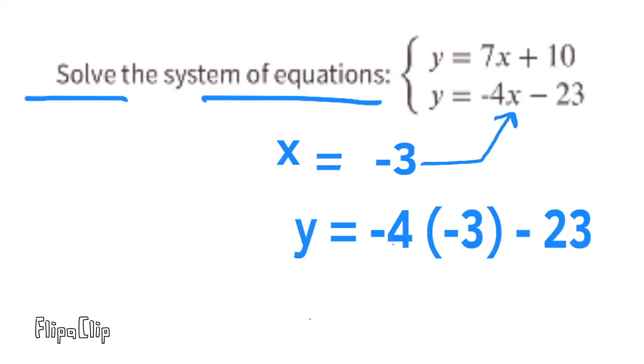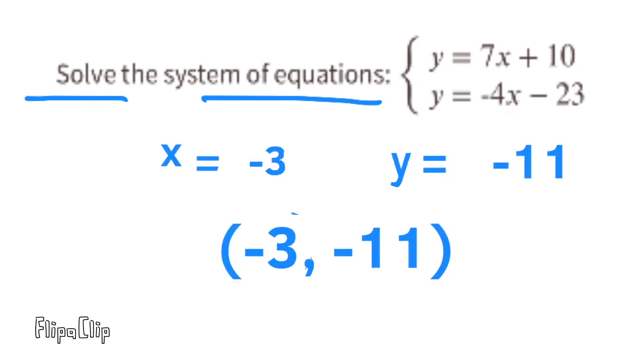We know that X equals negative 3, so we can substitute negative 3 for the X. The equation reads Y equals negative 4 times negative 3 minus 23. Negative 4 times negative 3 is positive 12. Let's combine the like terms. 12 minus 23. 12 minus 23 is negative 11. Now we know that Y equals negative 11. X equals negative 3, and Y equals negative 11.